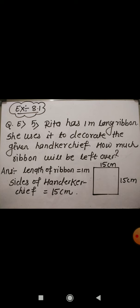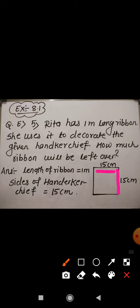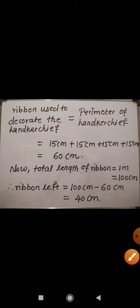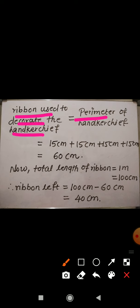The sides of the handkerchief are 15 centimeters each. The ribbon used to decorate the handkerchief will be the same as the perimeter of the handkerchief. Perimeter means the sum of all sides: 15 + 15 + 15 + 15 = 60 centimeters. So 60 centimeters of ribbon is used to decorate the handkerchief.